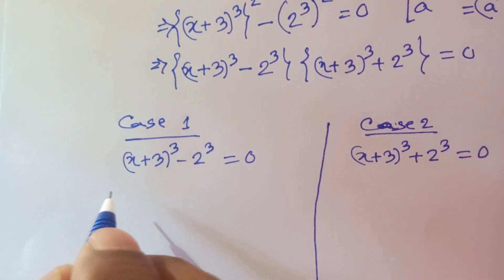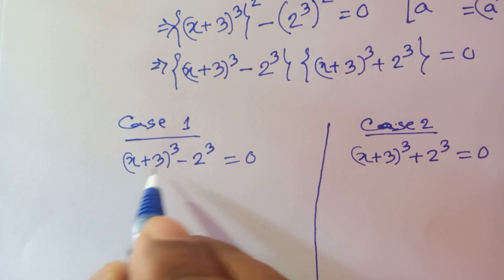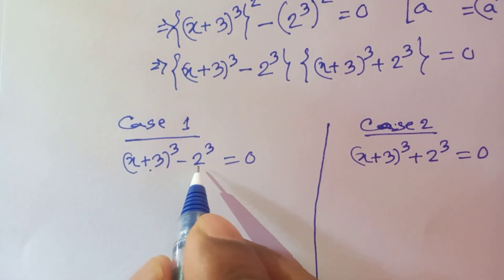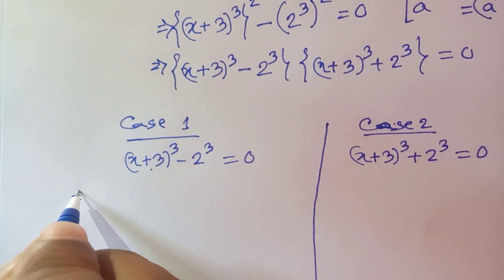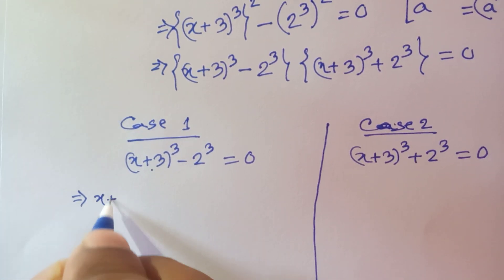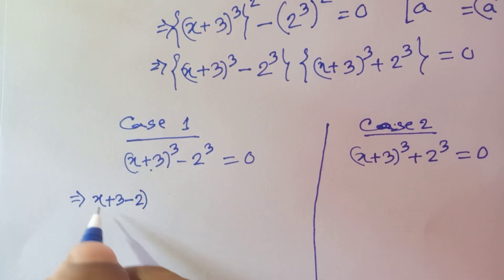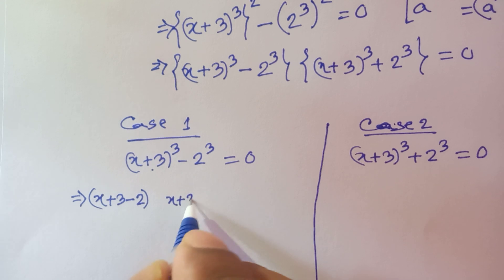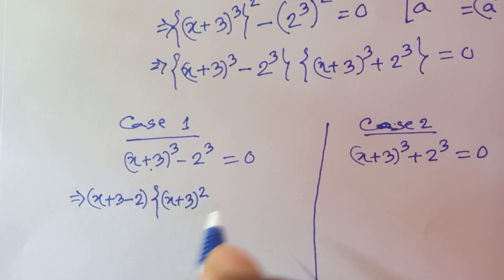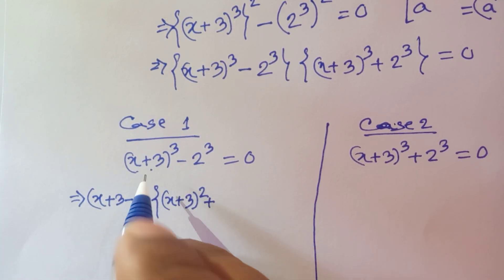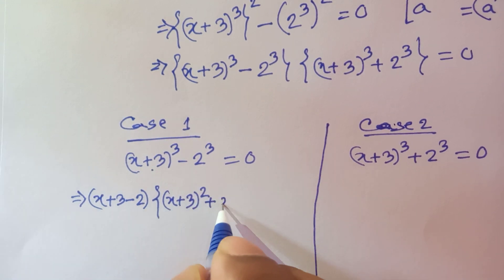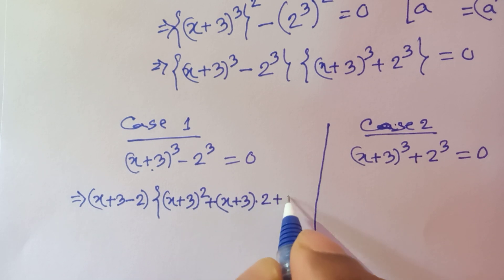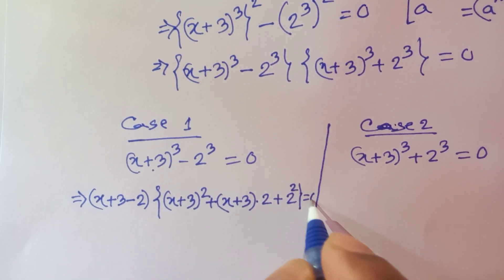In Case 1, this matches the formula for a cubed minus b cubed, where x plus 3 is a and 2 is b. So it becomes: x plus 3 minus 2, times x plus 3 whole squared, plus x plus 3 times 2, plus 2 squared, is equal to 0.